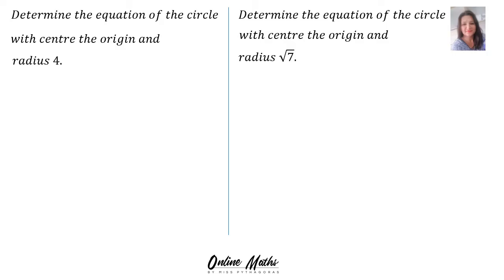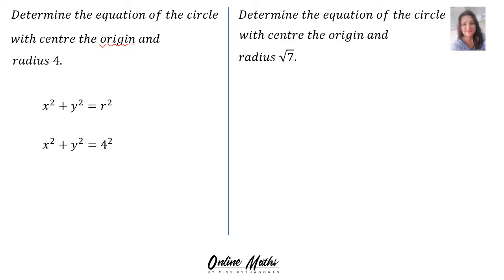Example 1: Determine the equation of the circle with center at the origin and radius 4. It's very important to note that our circle center is at the origin. The equation we will use is x² + y² = r². In r's place, we substitute 4, so 4² = 16. Therefore, the equation for the circle is x² + y² = 16.